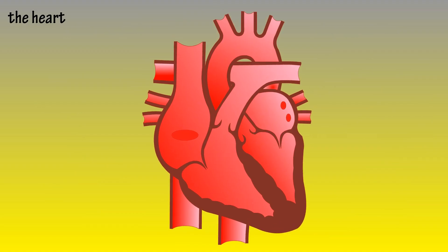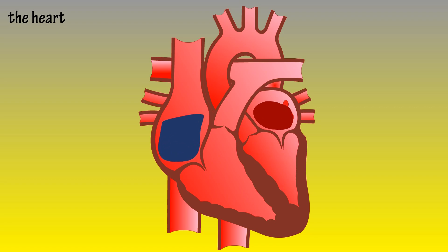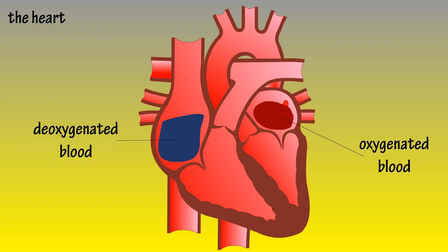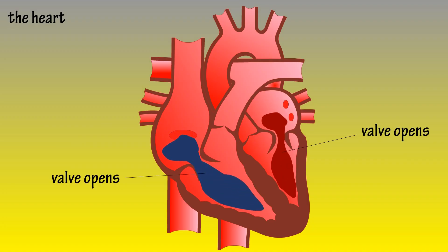The upper chambers, listed as number one and number three, are going to fill with blood. Chamber one fills with deoxygenated blood from the body, and chamber three fills with oxygenated blood coming from the lungs. As this happens, valves A and D start to open and blood starts to flow into chambers two and four.